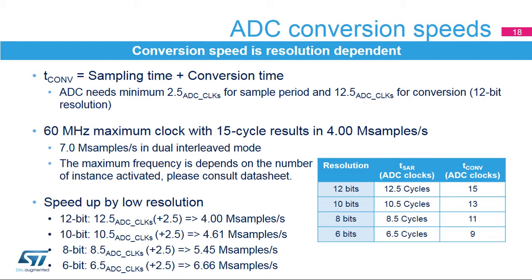For higher sampling speed, it is possible to reduce the resolution down to 10, 8, or 6 bits. When associating a master and a slave ADC in interleaved mode, the maximum performance is one sample every 8 clocks, achieving 7 mega samples per second at 56 MHz.